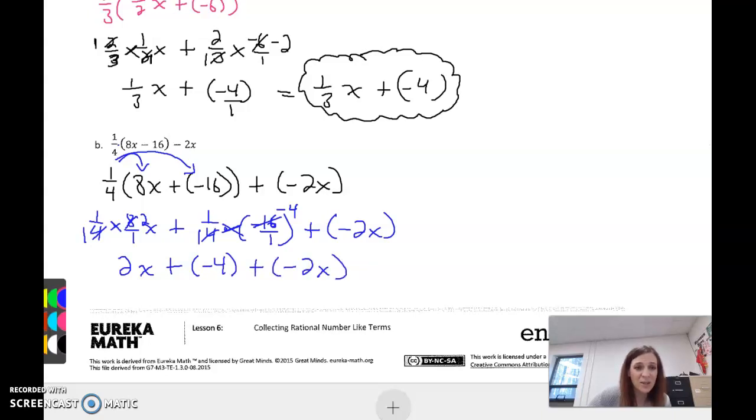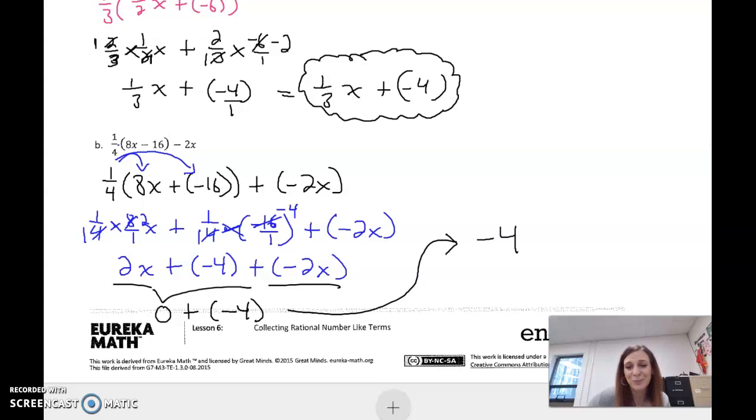Well now, let's look at our like terms here. If I have two xs and a negative two xs, guess what that equals? Zero. So I have zero plus my negative four. And guess what? That means our solution is just negative four.